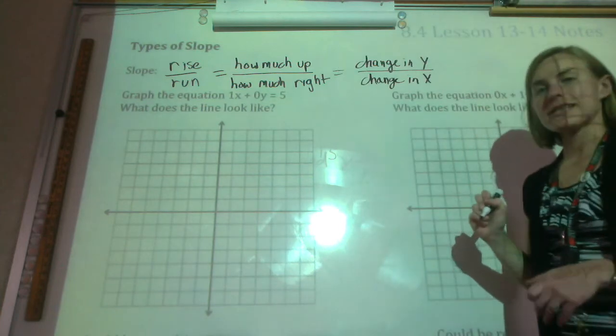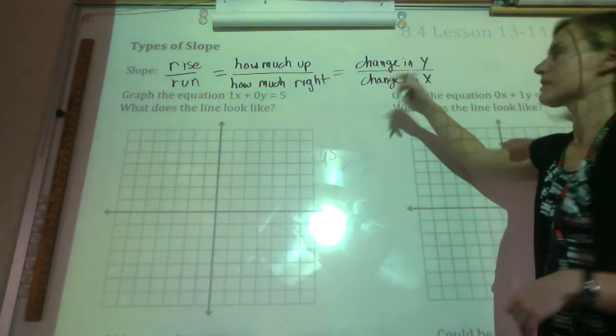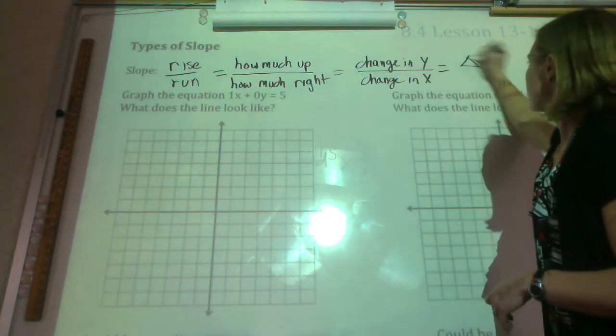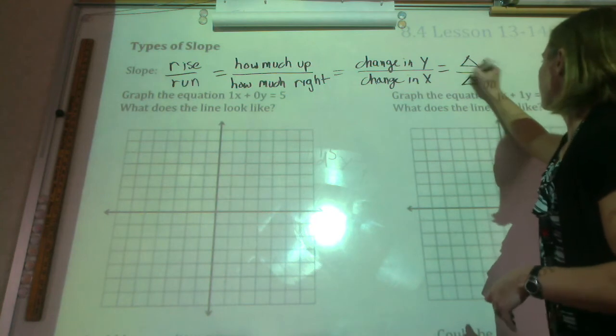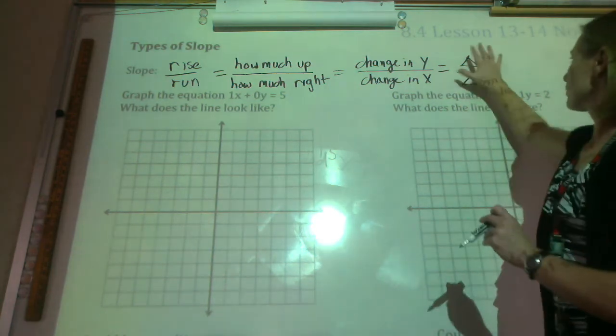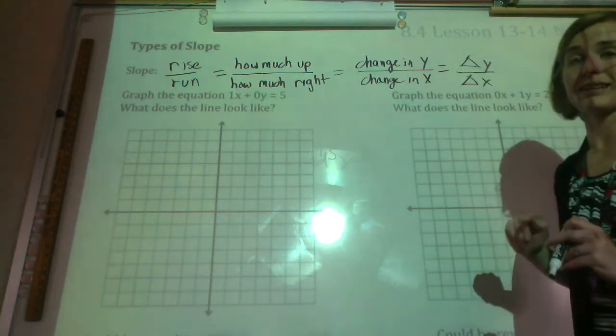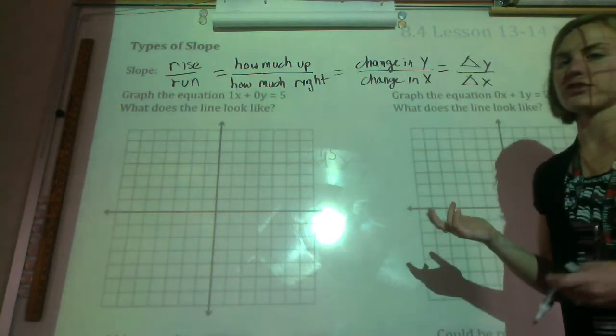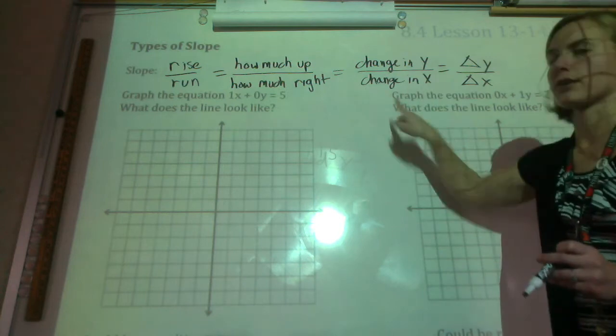Another way of thinking about it is it's the change in y divided by the change in x because y goes up and down and x goes left and right. And when you get to high school, this whole change in y, change in x thing will be rewritten as delta y over delta x because delta means change. So if you don't want to know that right now, that's totally fine. But that's how you'll see it in high school. Delta just means change. So it's a fast way of writing this whole thing right here.